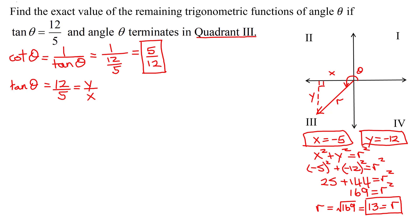So let's work with the next trig function I'm going to find, which is the sine of theta. Defined in terms of x, y, and r, it's y over r. y is negative 12, r is 13, so the sine of theta equals negative 12 thirteenths.